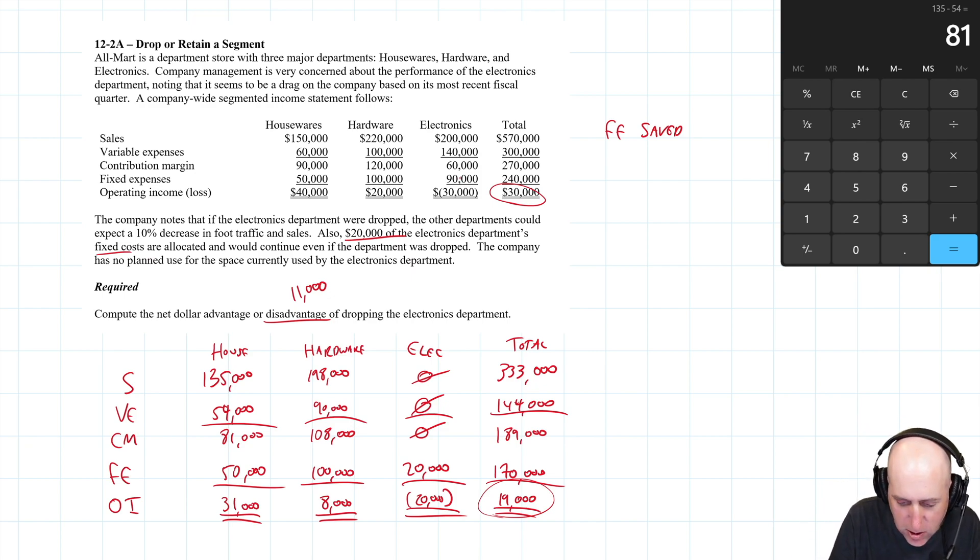The big relevant item is you save a bunch of fixed expenses. We're going to save $70,000 in fixed expenses. $20,000 stay in the company, $70,000 of the $90,000 go away. So $70,000 is fixed expenses saved if we drop the department. We're going to lose some contribution margin. Contribution margin lost for the electronics department is $60,000. That's bad for us. The fixed expenses saved is good. We don't have to spend $70,000 in fixed expenses that we used to have to spend. We also lose contribution margin in hardware and housewares.